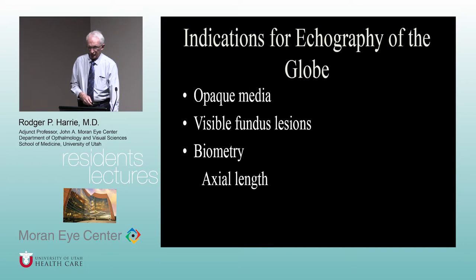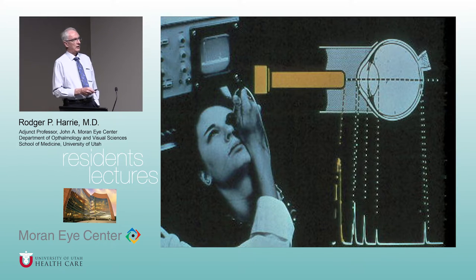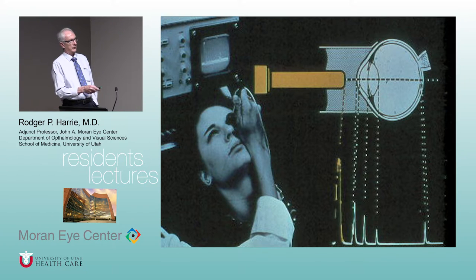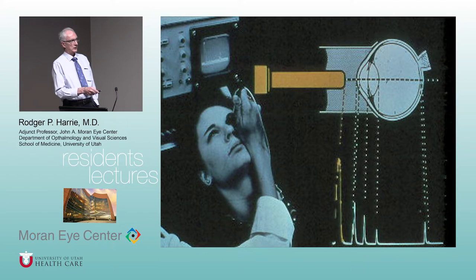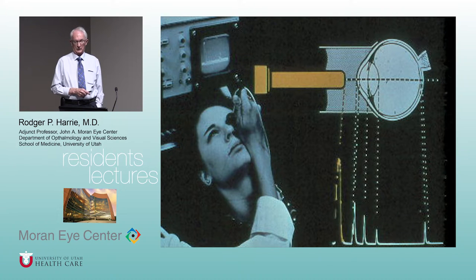For biometry, we use immersion techniques where we put a shell between the lids and stand the probe back, eliminating the dead zone. Once past the dead zone reverberation from the probe, you're going through the shell, hitting the cornea spike, through the anterior chamber, anterior lens, posterior lens, vitreous, and retina — separating out different tissues with immersion ultrasound.